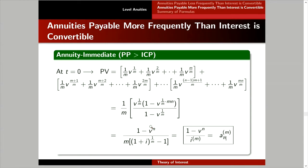I will not derive the formula for the accumulated value of this annuity immediate, because by now you should be expert at relating annuities. To get the accumulated value from the present value of an annuity immediate, you simply multiply by (1 + i) raised to n, and you get s-angle-n upper m. There will be a summary of formulas at the end of the lecture.